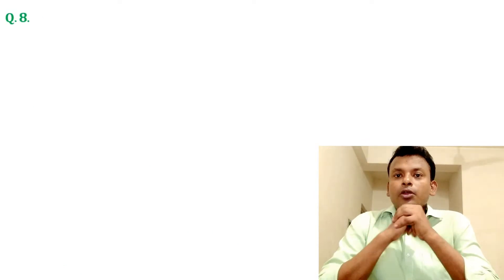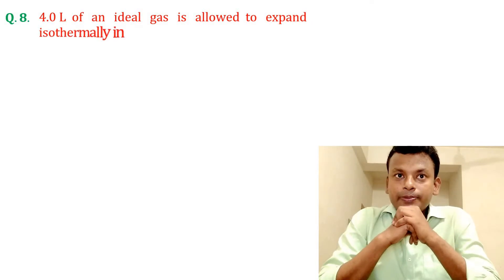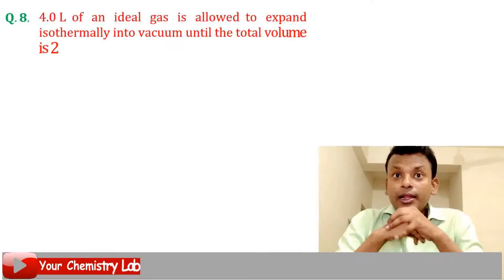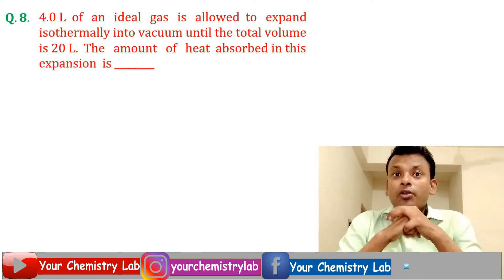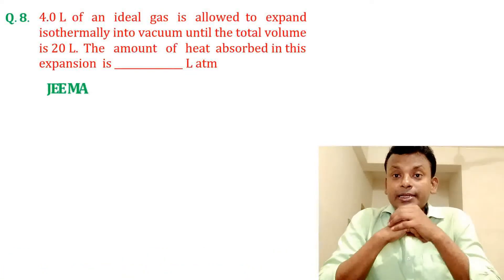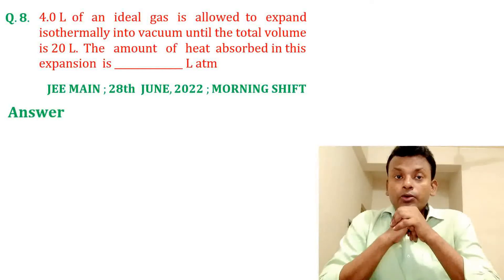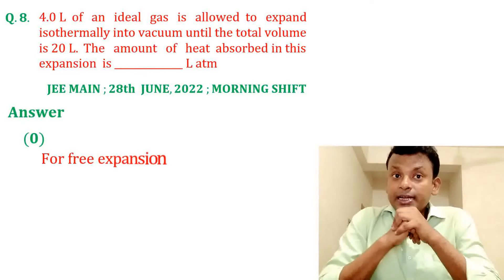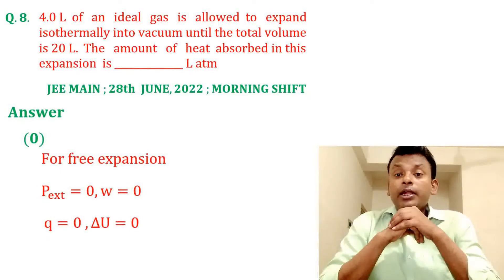Question 8. 4.0 liters of an ideal gas is allowed to expand isothermally into vacuum until the total volume is 20 liters. The amount of heat absorbed in this expansion is asked in liter·atm. This question was set in JEE Main 28th June 2022 morning shift. Answer is 0. For free expansion, P_external = 0, so W = 0, Q = 0, and ΔU = 0.